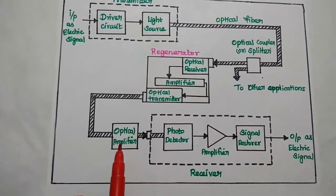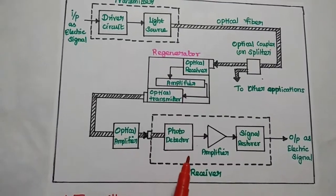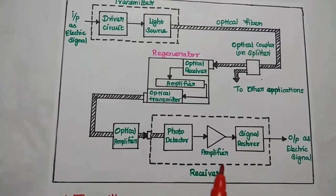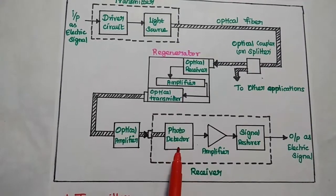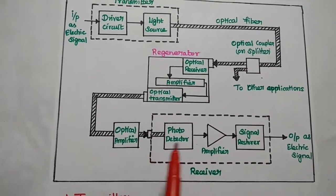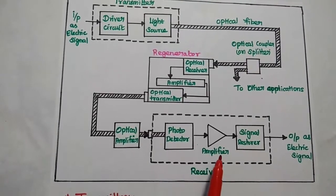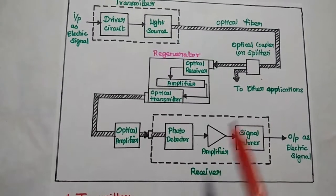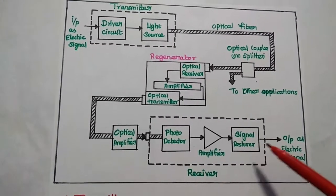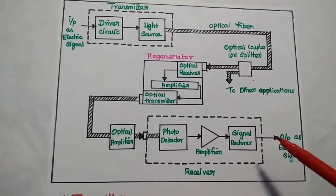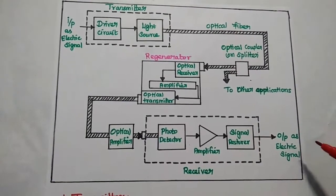The optical amplifier is also used to increase the strength of the signal. The optical receiver detects the optical signal using a photo detector and converts it into an electrical signal. It can be amplified using an amplifier. Then the signal restorer is used to restore the original information and give it to the output destination.